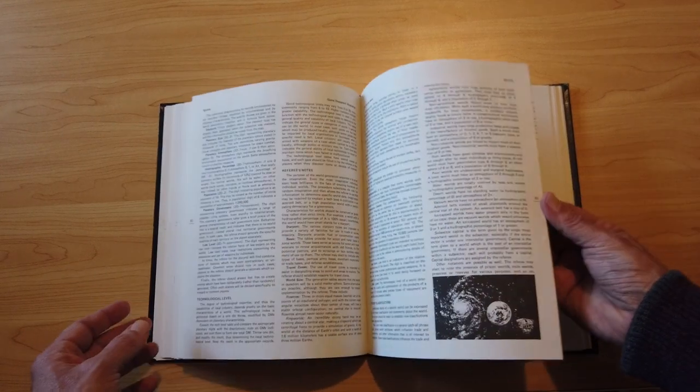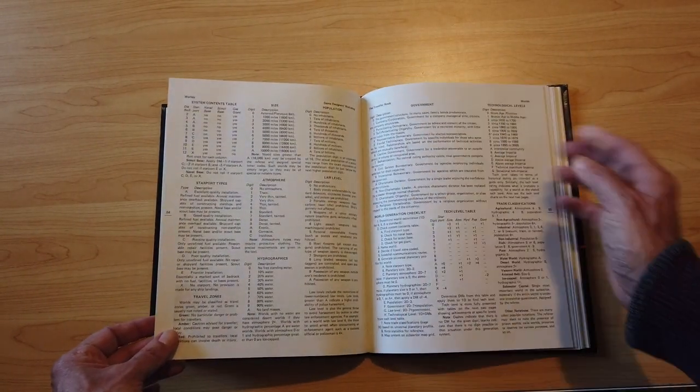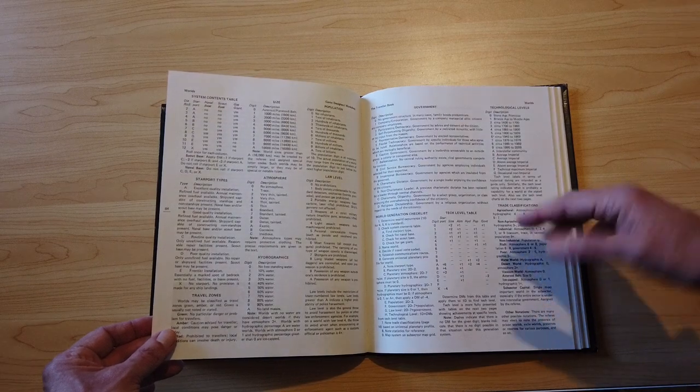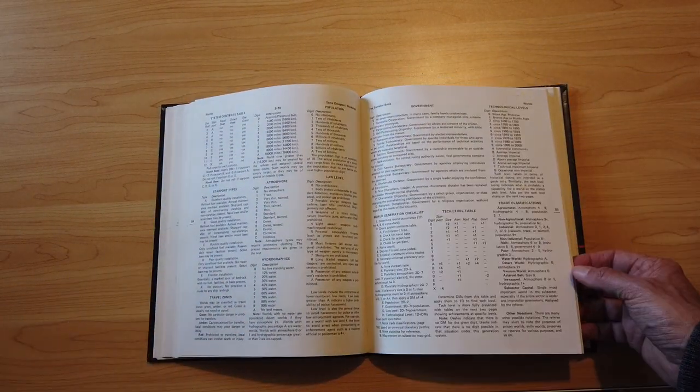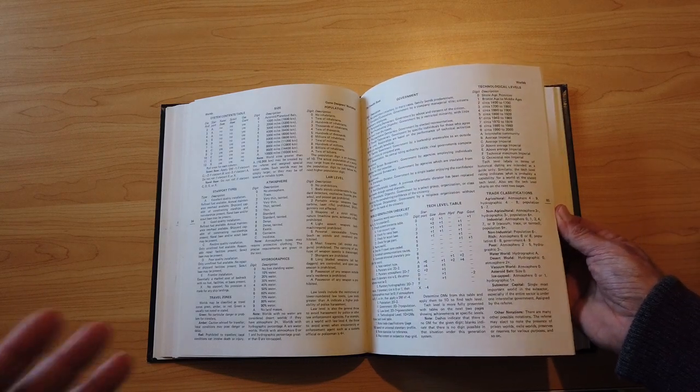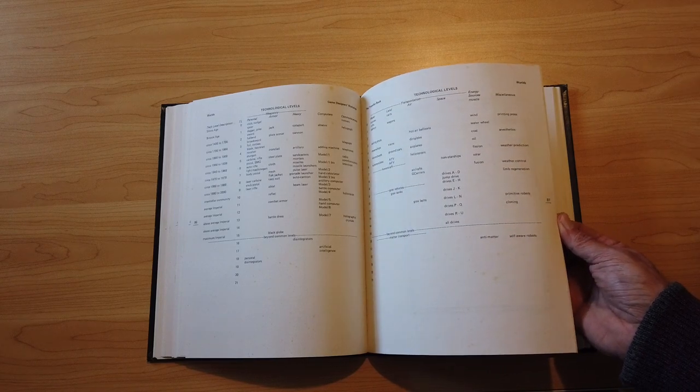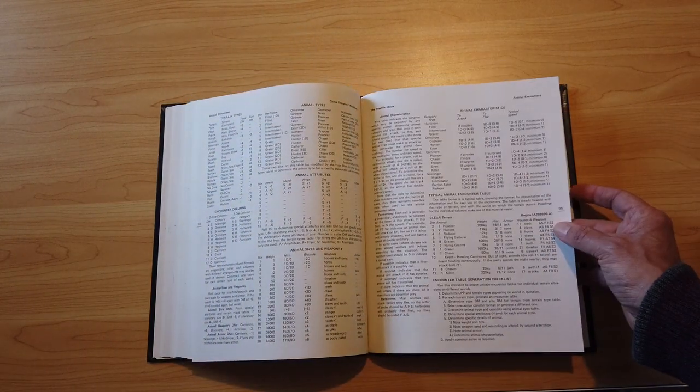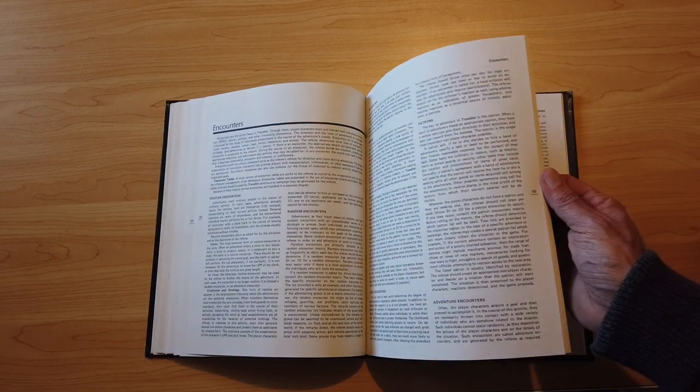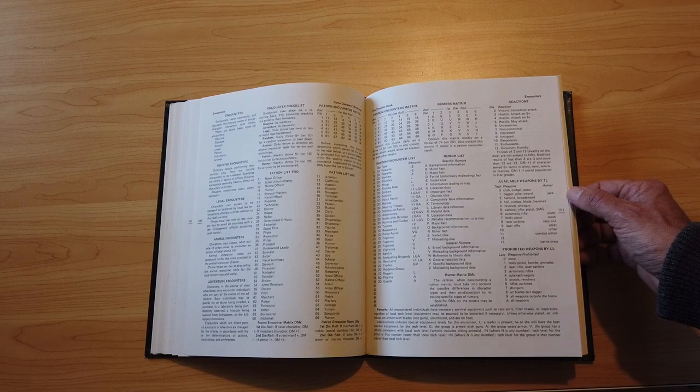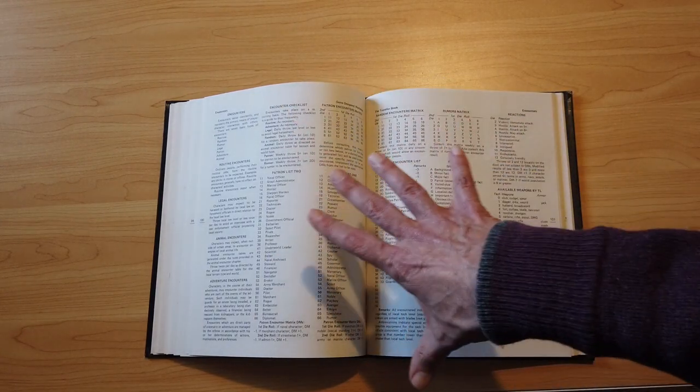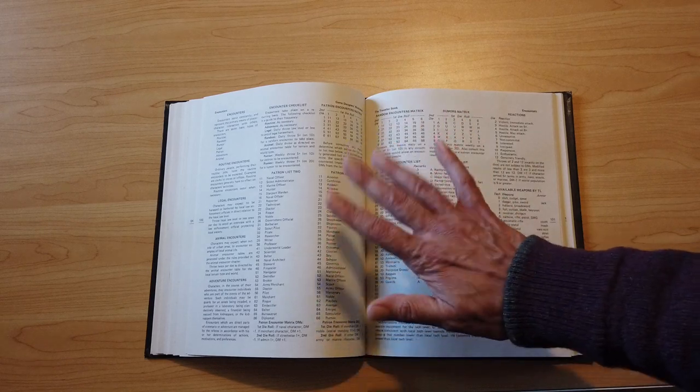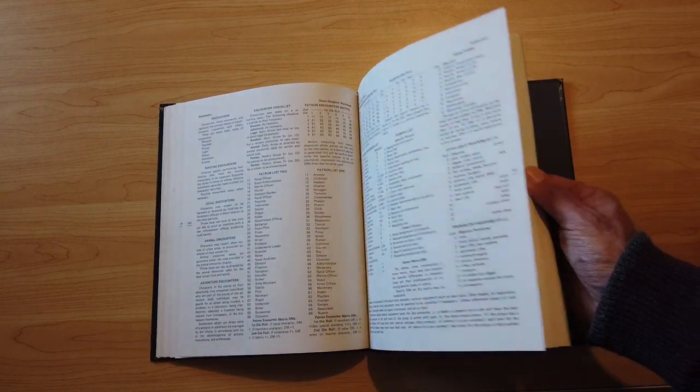Information about how to create different worlds in the systems. And again, more tables. So determine the size, the atmosphere, hydrographics, population, law level, the government. And it had a naval base or a scout base or a gas giant. One of the ways you could refuel your spaceship was skimming over a gas giant. Here's sort of a table of different technological levels and what kind of technology they'd have. How to create alien animals. How to create encounters. Again, random tables. Do you find a patron to give you a job? Do you hear random rumors, which is a great... This actually is great. Even if I wasn't going to use anything else of the system, this is definitely worth looking into because it can create some really good springboards for ideas for adventures for Traveler.